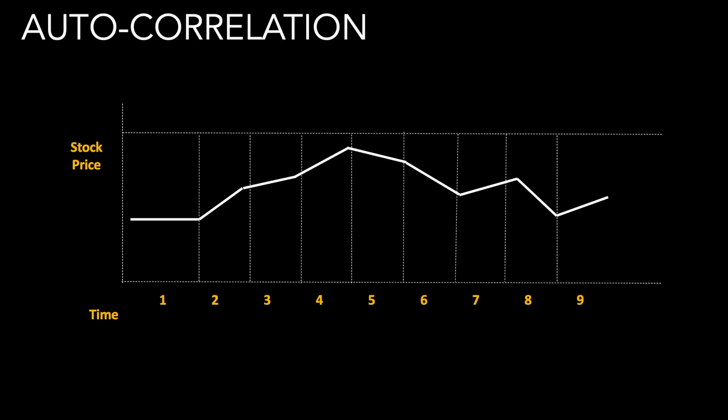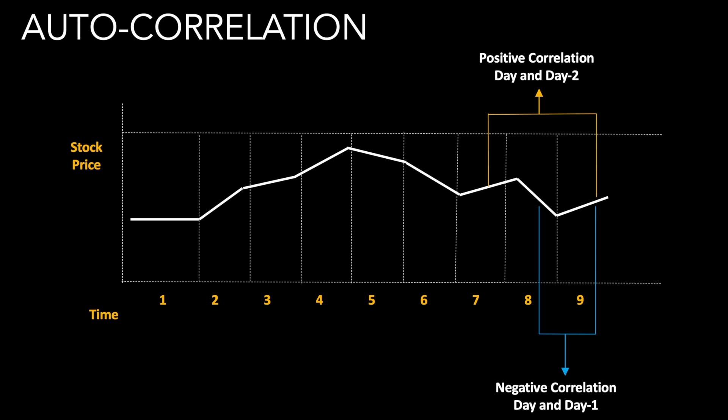In this section I will talk about autocorrelation. Let us start with a conceptual example. Consider a stock price chart where the price on day 9 has increased but the price on day 8 has decreased — this means there is a negative correlation between day 9 and the previous day. On the other hand, if the price on day 9 has increased and the price on day 7 has also increased, there is a positive correlation between day 9 and day minus 2.